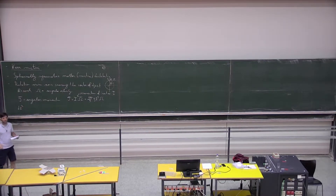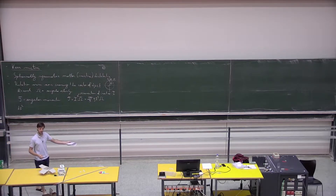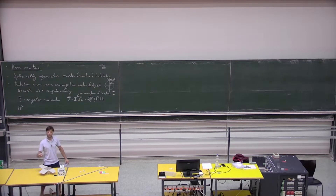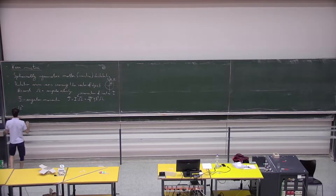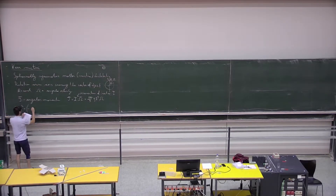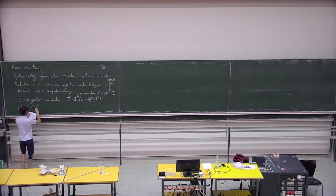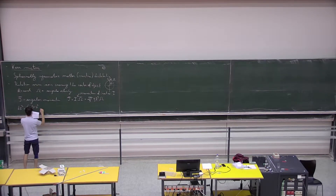This metric was derived in 1963. It's not like the previous two metrics derived right after general relativity — it was derived way after, because it's really an annoying process. So I just give you the final form of the metric, which has a delta function that is going to be different from what we have seen before.